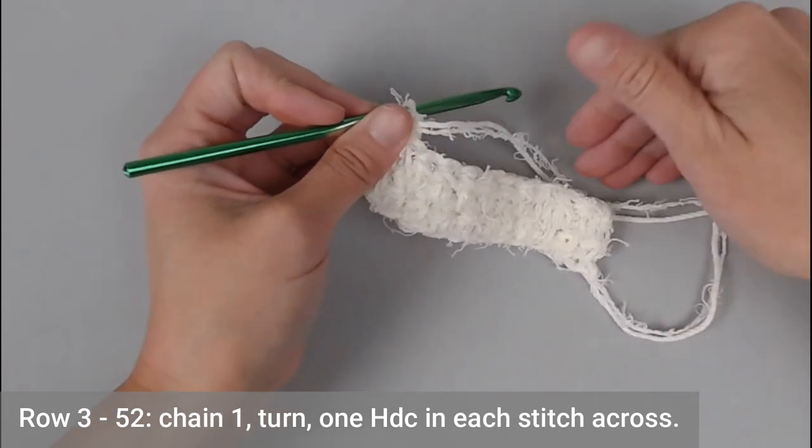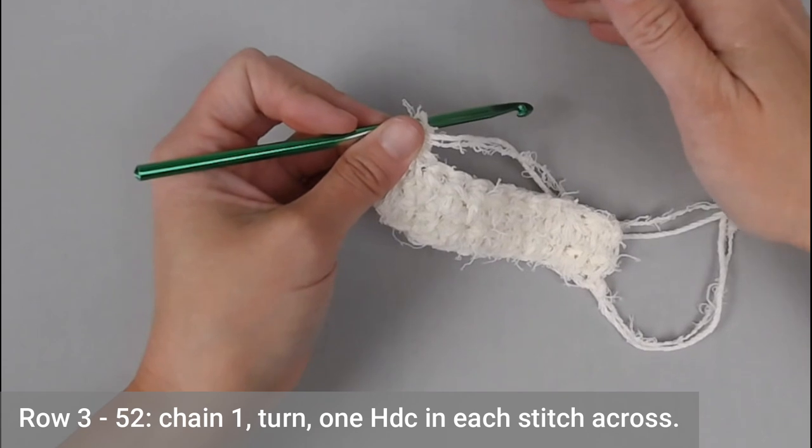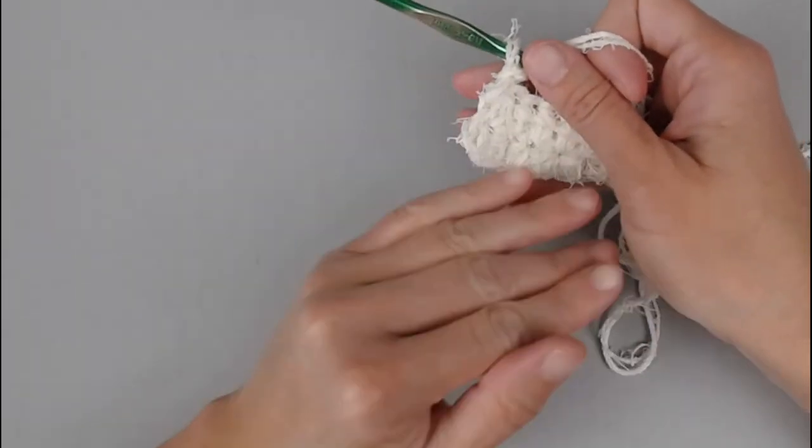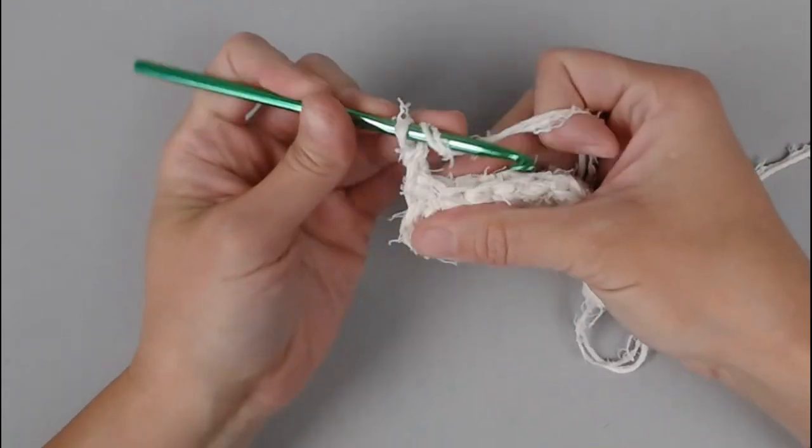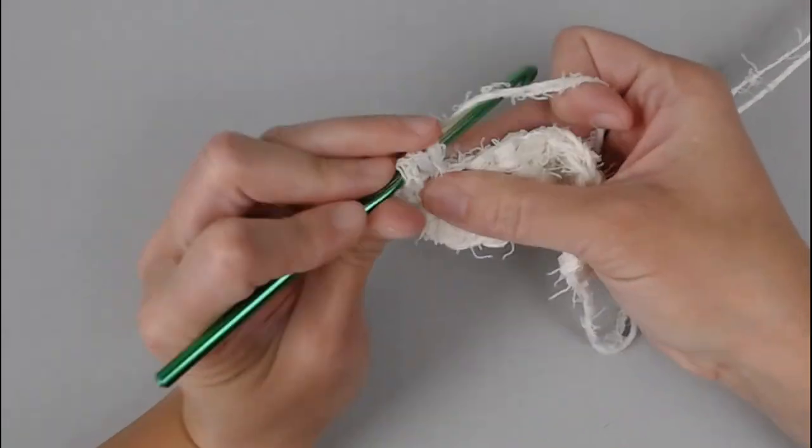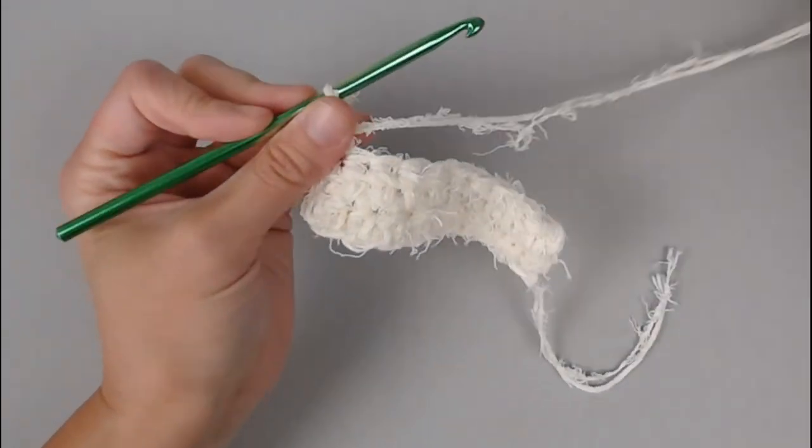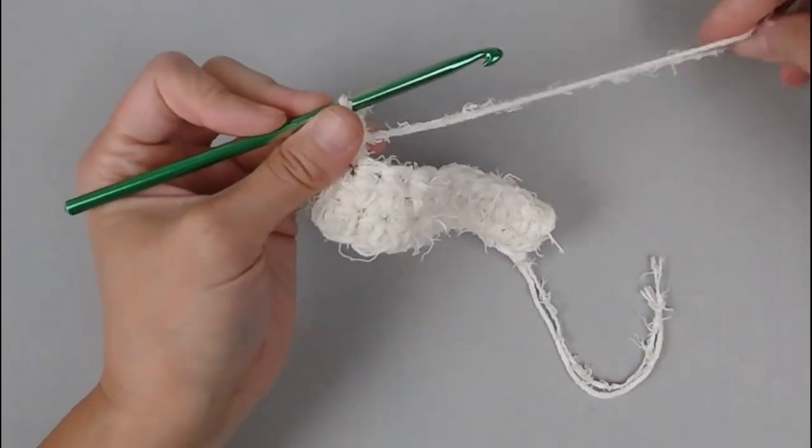For every row here on out to the end of row 52, that's right, we're going to repeat row 2 through the end of row 52. All you're doing is chaining 1, turning your work, and making a half double crochet in each stitch all the way across. You will end each row, row 3 through the end of row 52, with a total of 10 half double crochet stitches in each row.